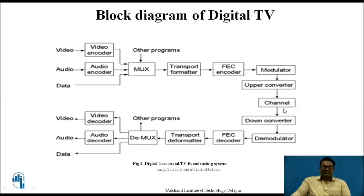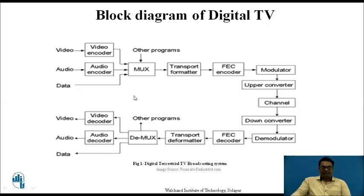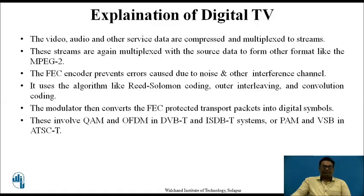The receiver includes the channel, down converter, demodulator, FEC decoder, transport deformatter, DMUX, and then video decoder, audio decoder, and data output. This is the receiver part, and the upper part is for the transmitter, both used for digital television broadcasting.